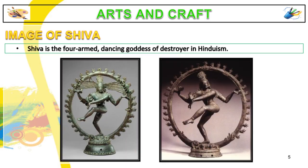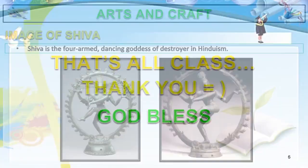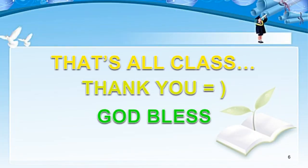Now we have the image of Shiva. Shiva is the four-armed dancing goddess of destruction in Hinduism. That's all for today. Now go ahead and answer the module. Thank you and God bless.